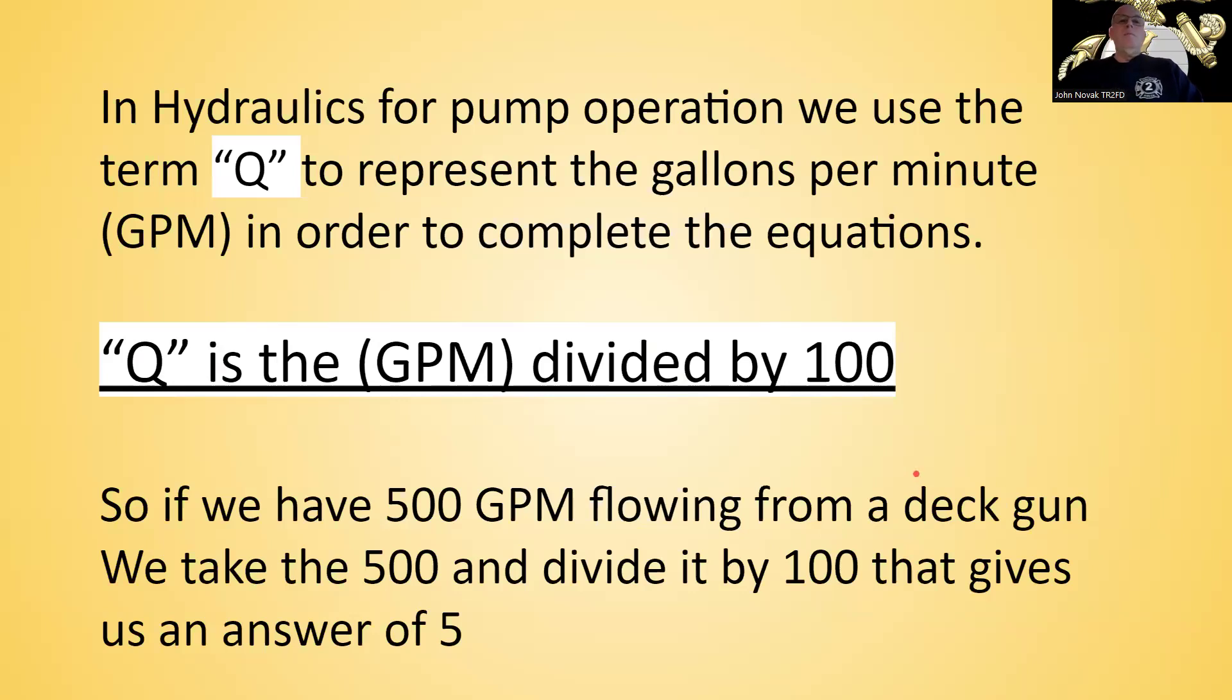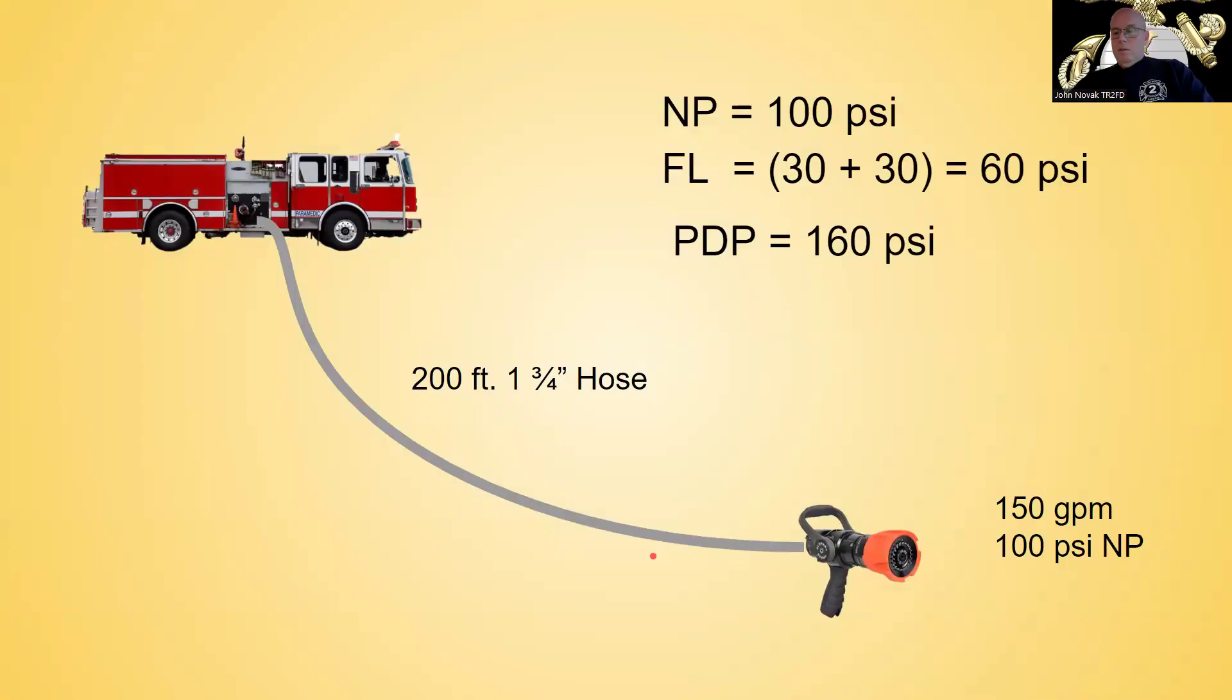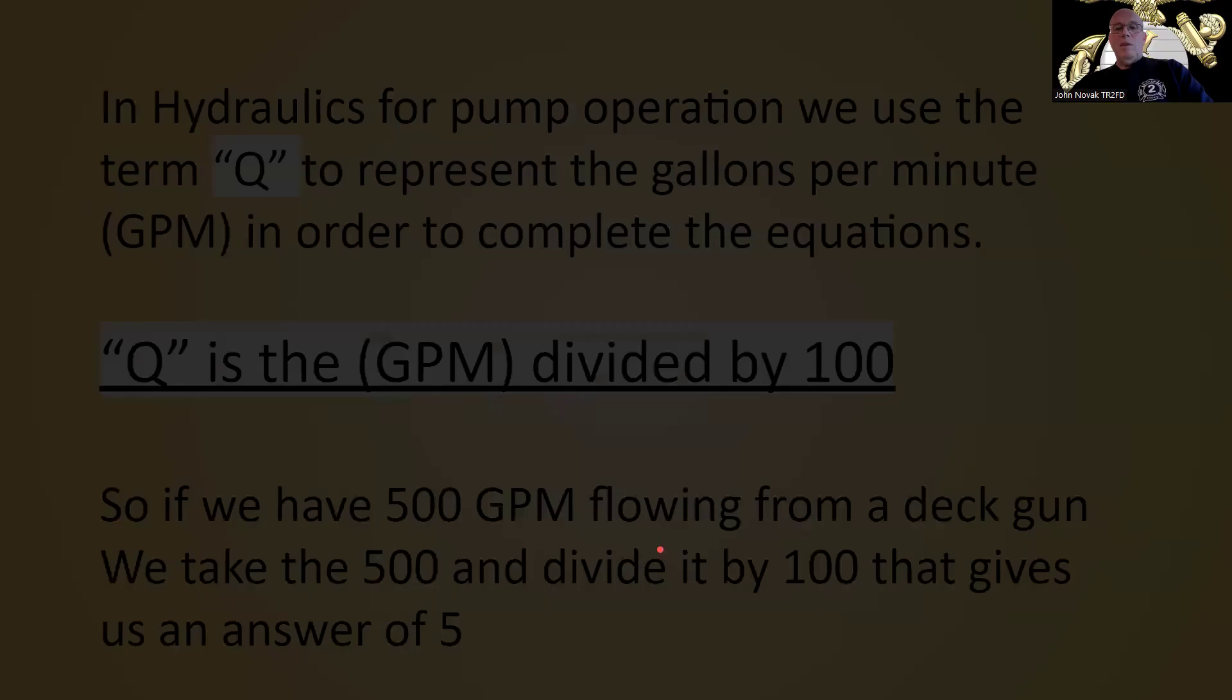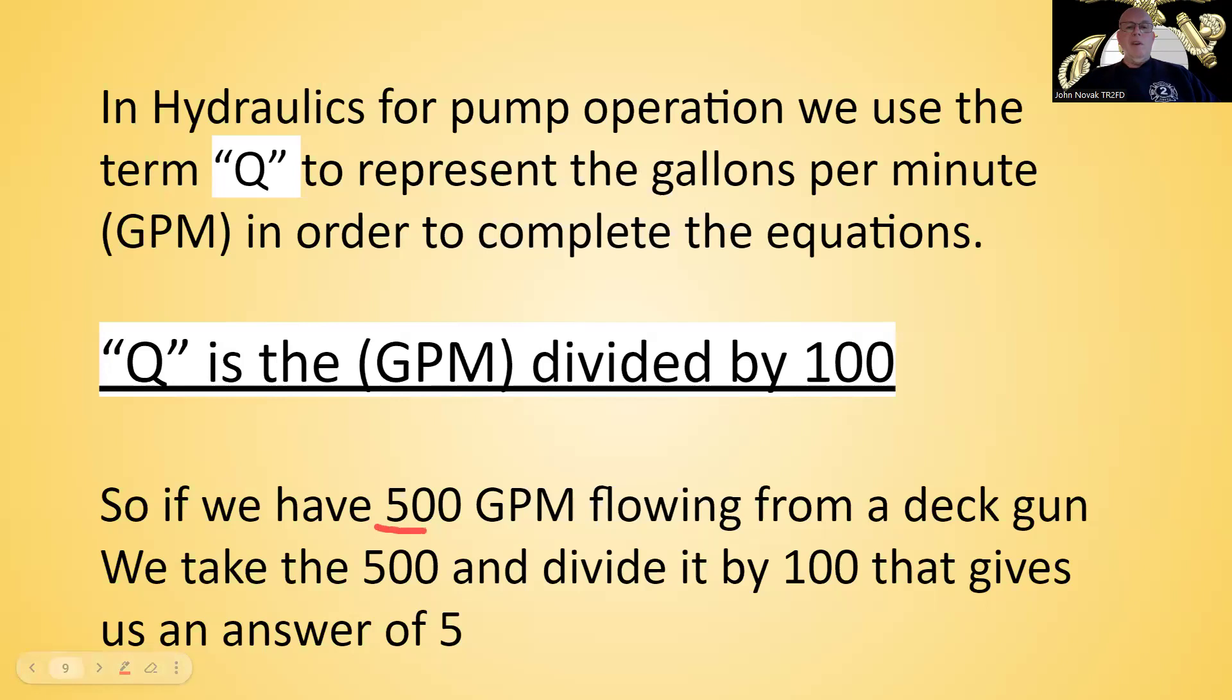So when we talk hydraulics, when we start getting into some formulas, we use the term Q. So Q is our term for gallons per minute. And Q is the gallons per minute divided by 100. So an example I have below here, if I have 500 gallons a minute flowing from a deck gun, we take 500, we divide it by 100. That leaves me with 5. So that would equal Q.